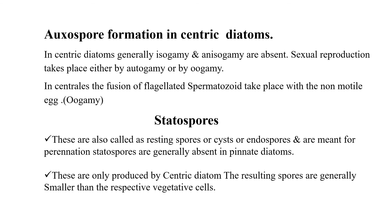As per your syllabus, you are supposed to study sexual reproduction and the life cycle of pinnate diatoms. Now we talk about auxospore formation in centric diatoms. In centric diatoms, isogamy and anisogamy are generally absent. Sexual reproduction takes place either by autogamy or by oogamy. In centrals, the fusion of a flagellated spermatozoid takes place with a non-motile egg — that is oogamy.